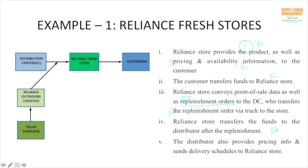Before the distribution center sends an order, it also sends delivery schedule and pricing information to the Reliance Fresh store — this is the flow of information. Based on this, Reliance prepares itself to accommodate the incoming supply in its warehouse and store, and decides on offers to give customers. The flow of information is very important and happens more frequently than the flow of funds or product. The flow of product happens once, but the flow of information happens many times.